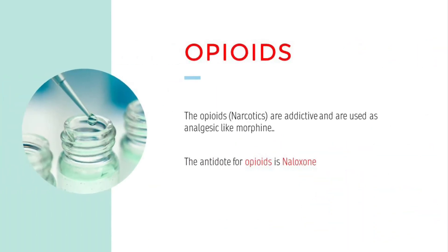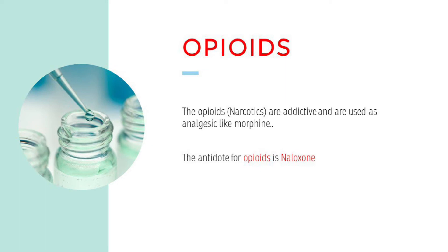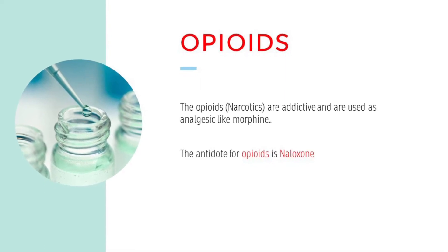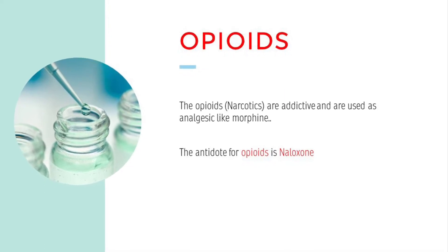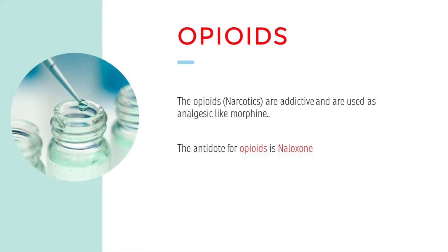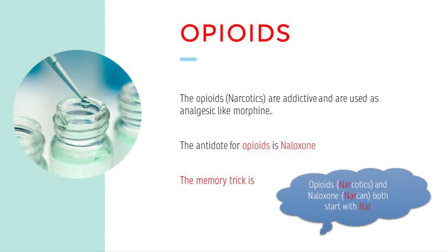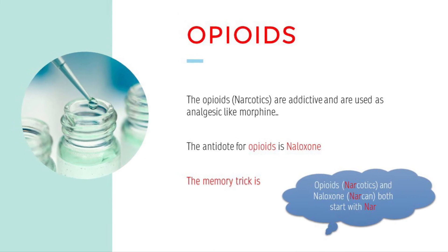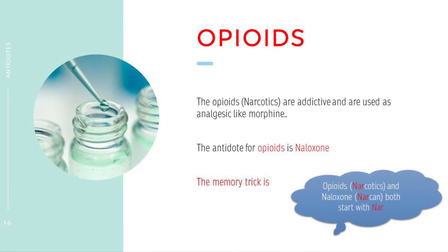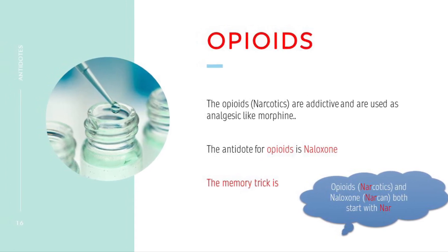Opioids. Opioids or narcotics are addictive and are used as analgesics, like morphine. The antidote for opioids is naloxone. The memory trick is opioids or narcotics and naloxone or Narcan both start with N-A-R.